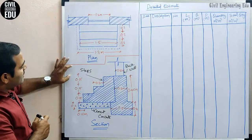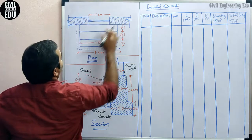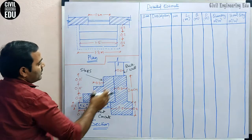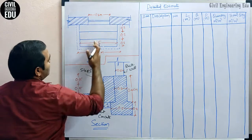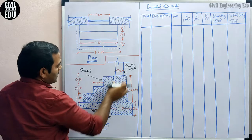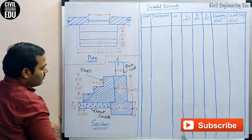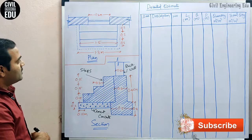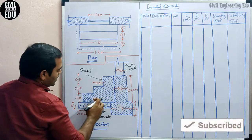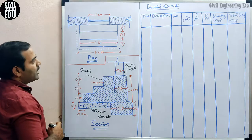This is the plan and this is the section in which we are going to do the calculation. This is a brick wall and this is the plan of the steps, and here is the cross section. If you cut the section here, it looks like this — there are three steps: step one, step two, and step three. This is the wall basement and this is the PCC which is laid below the steps. First we will calculate plain cement concrete quantity, then step one, step two, and step three.